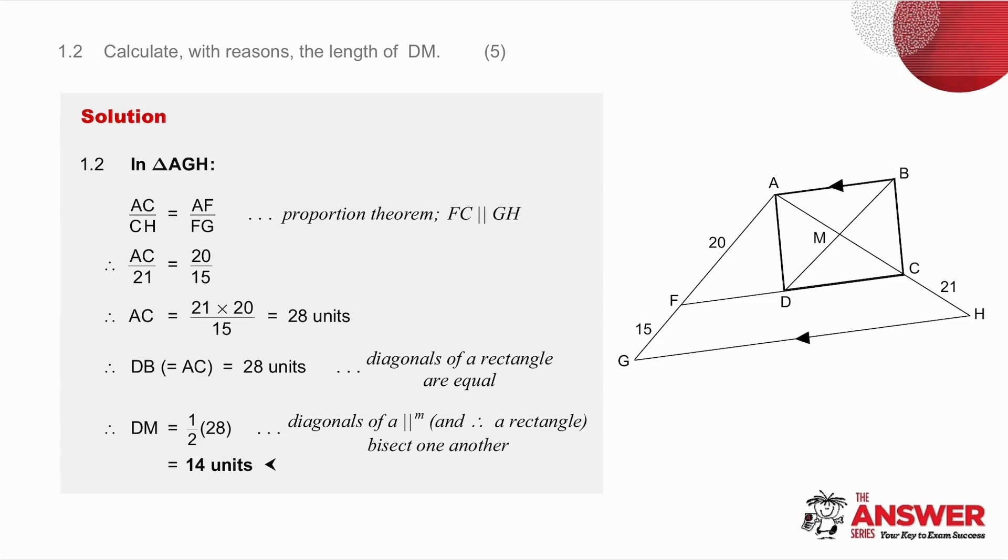The second question asks me to calculate the length of DM. If I look at where DM is on the diagram, DM is part of the diagonal of the rectangle. I know in a rectangle that the diagonals bisect each other, so DM is half of DB. I also know in a rectangle that the diagonals are equal, so DB is equal to AC.